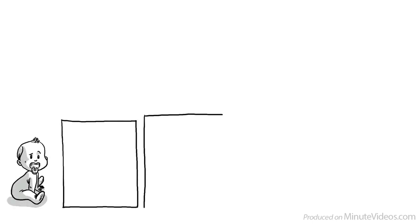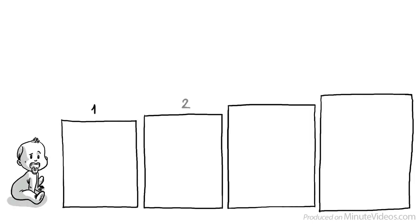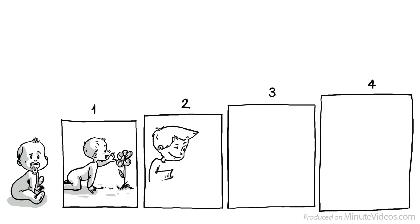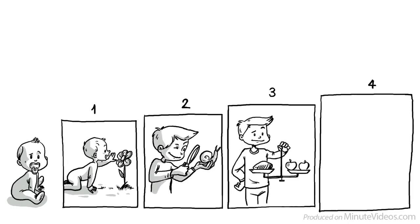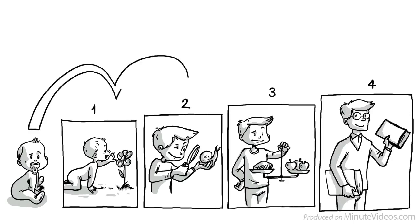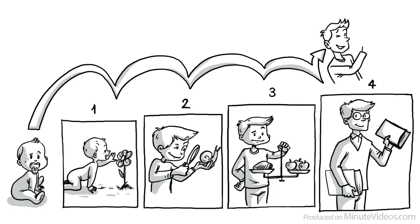Piaget's theory argues that we have to conquer four stages of cognitive development. First, the sensory motor stage. Second, the pre-operational stage. Third, the concrete operational stage. And fourth, the formal operational stage. Only once we have gone through all the stages, at what age can vary, we are able to reach full human intelligence.